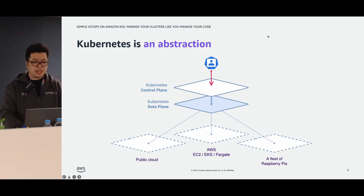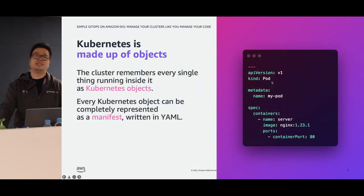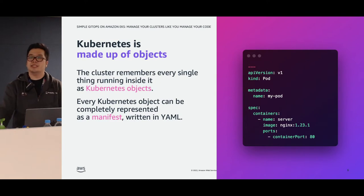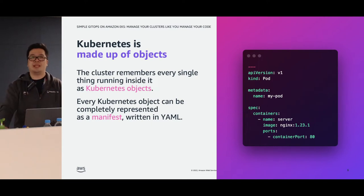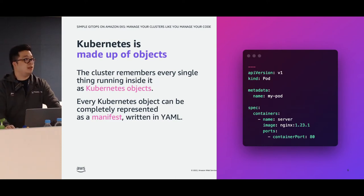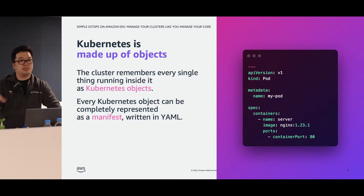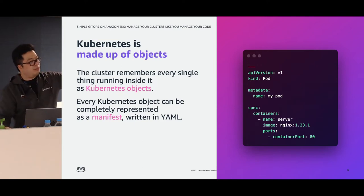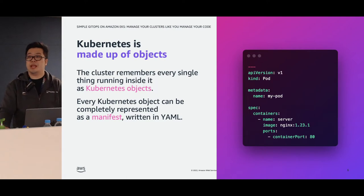Kubernetes is also made up of objects. A key concept you have to understand is that everything running inside a Kubernetes cluster is an object — a pod, a deployment, a service, a node, a namespace, and so forth. The nice thing is that every single one of those objects can be represented in something called a manifest, mostly written in YAML. Every single object inside Kubernetes can be represented in a manifest file.